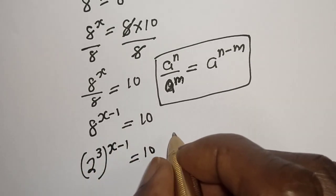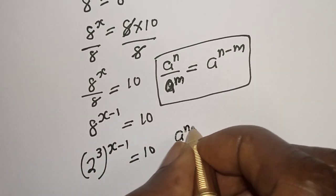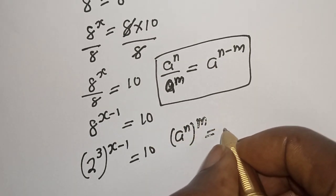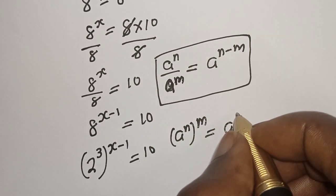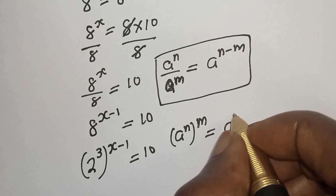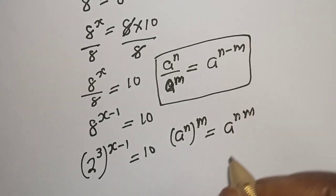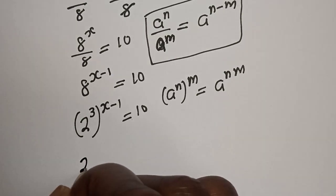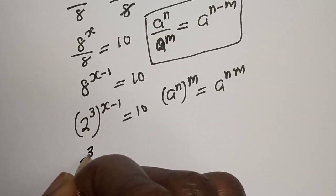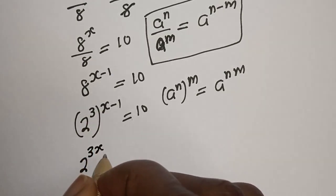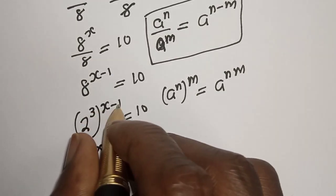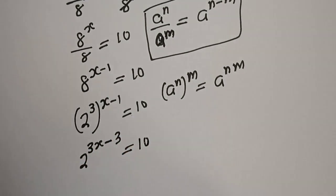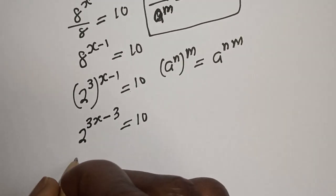Take note that if you have a raised to power n to the power of m, this is equal to a raised to power n times m. Then here is 2 raised to power 3 times s, that is 3s minus 3 times 1, so 3s minus 3 is equal to 10.